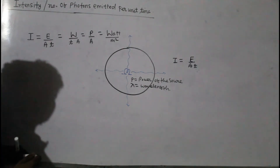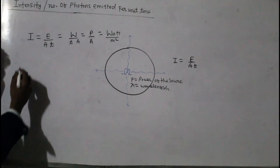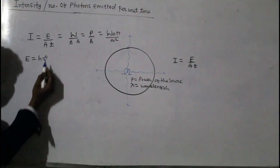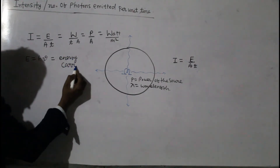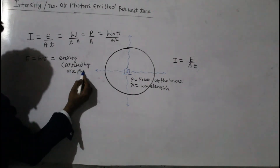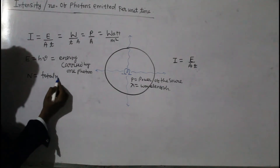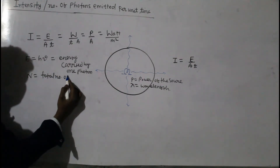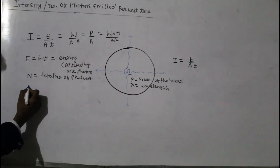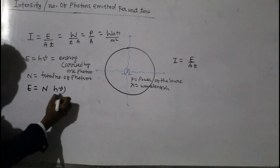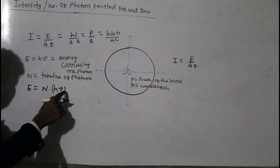Now we will calculate the number of photons emitted from this source of electromagnetic radiation per unit time. One photon carries energy E equal to H·nu. If there are N number of photons emitted from this source of radiation, then the total energy carried by N photons will be equal to E equals N into H into nu, where H·nu is the energy carried by one photon.